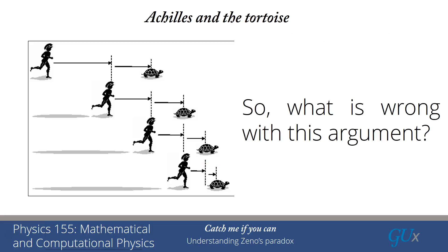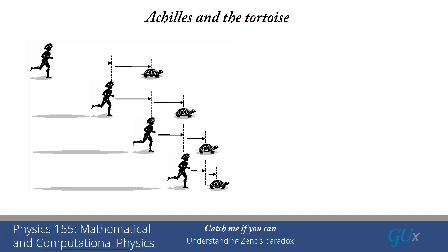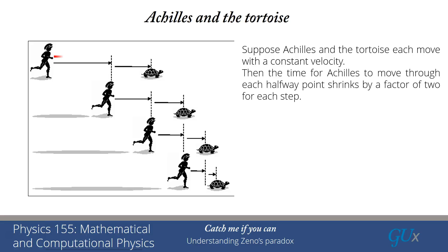Okay, so what's wrong with this argument? What we have to do is we have to treat the spatial motion and the time separately and analyze both of them. So suppose Achilles and the tortoise each move with constant velocity. Then the time it takes for Achilles to move through each halfway point is going to shrink by a factor of two for each step.